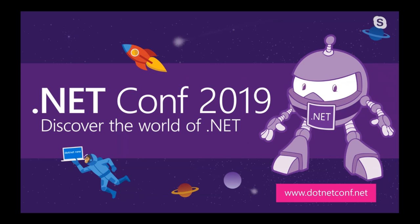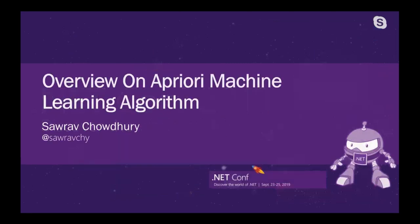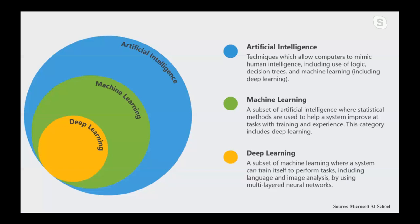Hello, dot dot com, 2018-2019. This is a presentation from Bangladesh. Today my topic is an overview on the Apriori machine learning algorithm — a recent machine learning algorithm that creates association rules from item sets. Before going into our main topic, we will cover a small idea about what is artificial intelligence, what is machine learning, and what is deep learning.